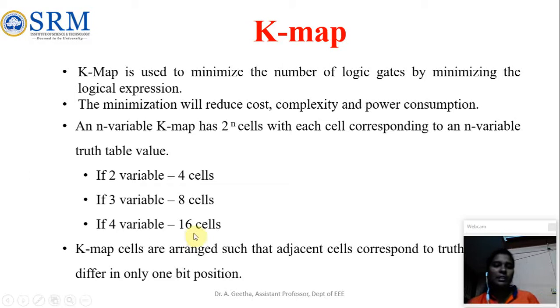K-map cells are arranged such that the adjacent cells corresponding to the truth table differ in only 1 bit position. So there is a rule that the adjacent cells in the K-map table should differ by only 1 bit.